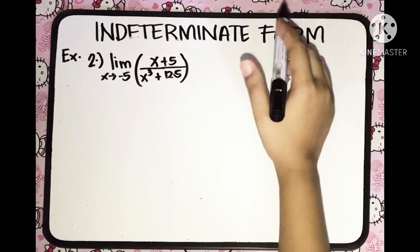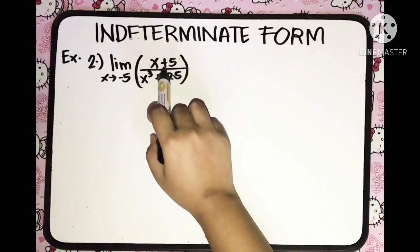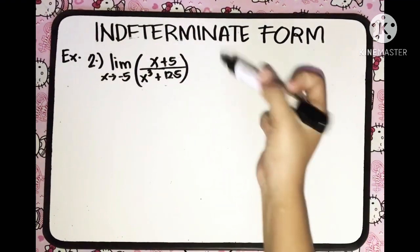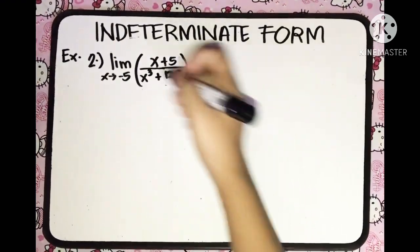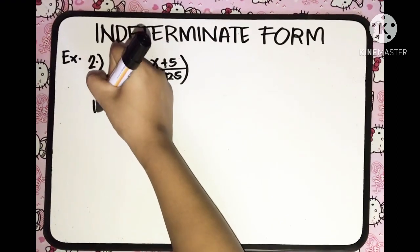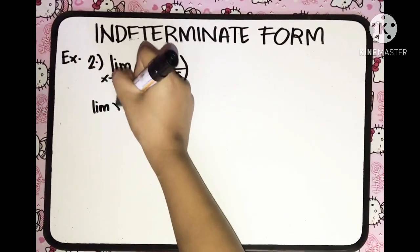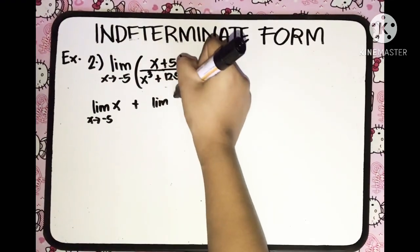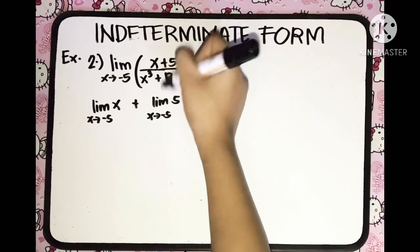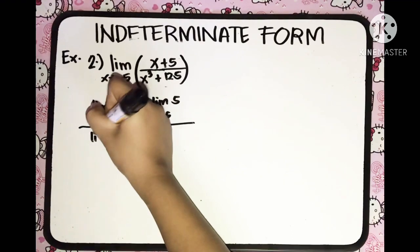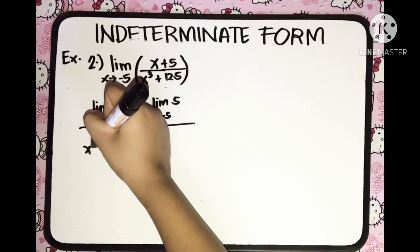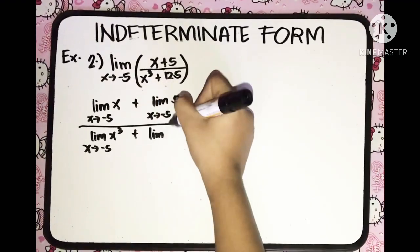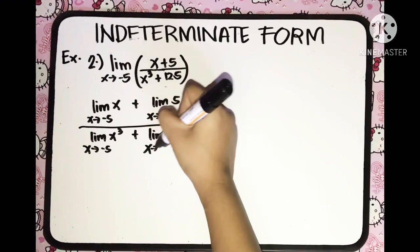Let's now have the second example: the limit of (x plus 5) over (x cubed plus 125) as x approaches negative 5. Applying the theorems on limits, we distribute to get the limit of x plus the limit of 5 as x approaches negative 5, all over the limit of x cubed plus the limit of 125 as x approaches negative 5.